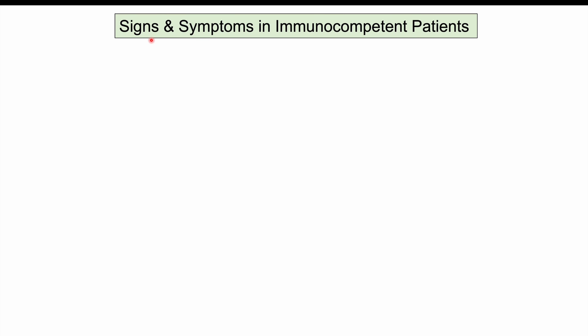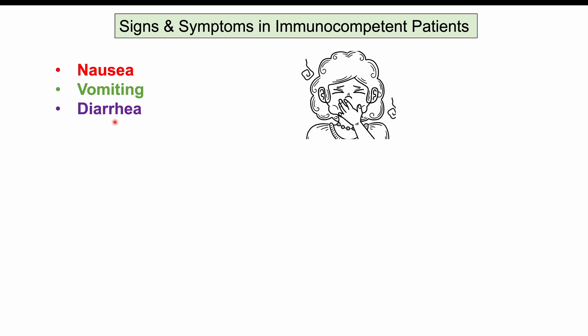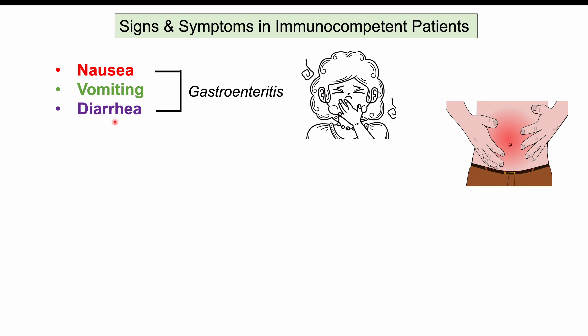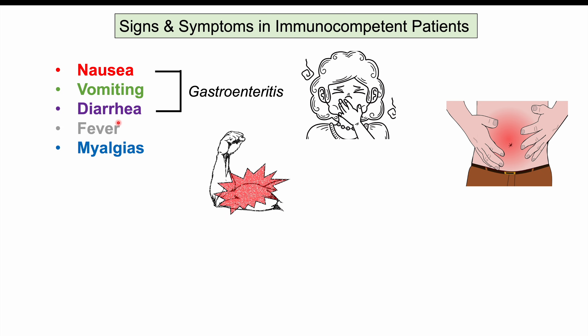In immunocompetent patients with a healthy immune system, Listeria infection can cause nausea, vomiting, and diarrhea — hallmark findings of gastroenteritis — along with fever and myalgias, giving it a flu-like presentation. Patients can also experience malaise, back pain, and headache. These non-specific, vague, flu-like symptoms are typical in otherwise healthy patients.